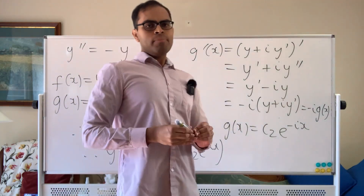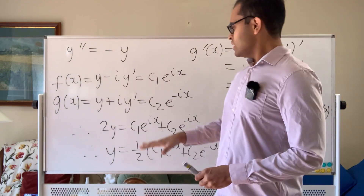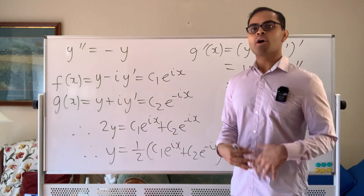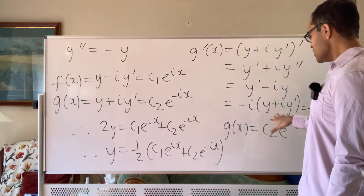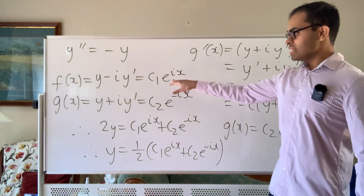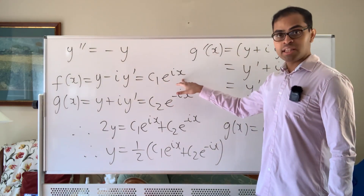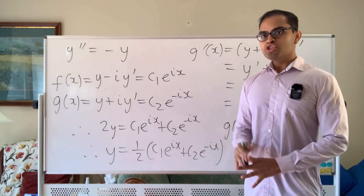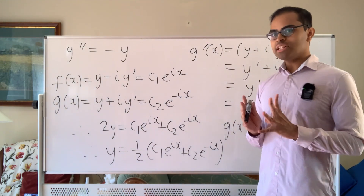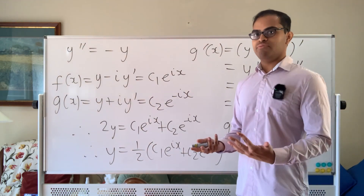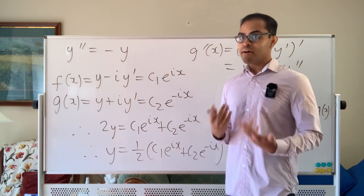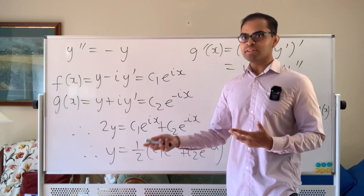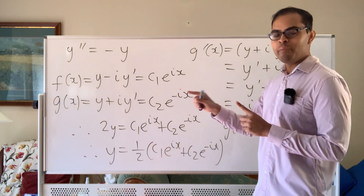Now, you may be asking: these are complex-valued functions, since e to the i x is complex-valued, and the constants c1 and c2 can be complex numbers. So to answer our original question about real-valued functions whose second derivative equals negative of themselves, we'll have to dig slightly deeper. This is where Euler's theorem comes in.